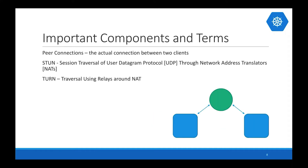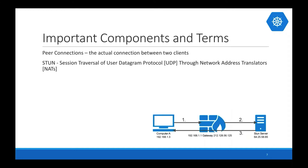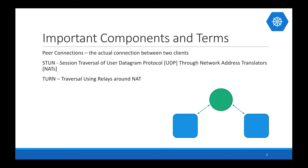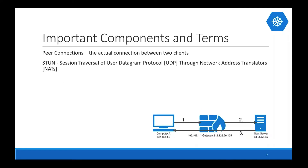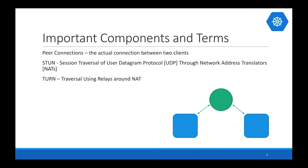The next one is TURN — Traversal Using Relays Around NAT. If you can't make a direct connection using just STUN, maybe because you have two different NAT types that don't work well together or robust firewalls that can't communicate, then you fall back to TURN, which allows you to make a relay connection to a separate server. It's no longer a direct peer-to-peer connection — you actually connect via an external server.